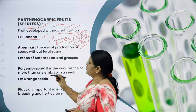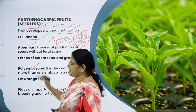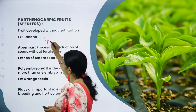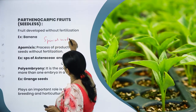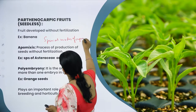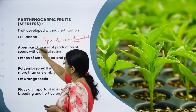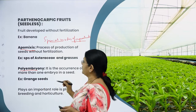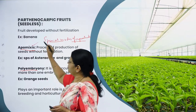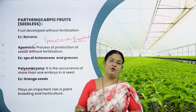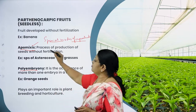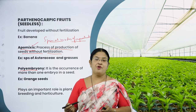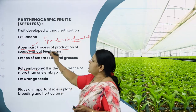Moving on to the next very important concepts: apomixis and polyembryony, which are special modes of reproduction. Apomixis is the process of formation of seeds without fertilization — that is, the process of production of seeds without fertilization is called apomixis.